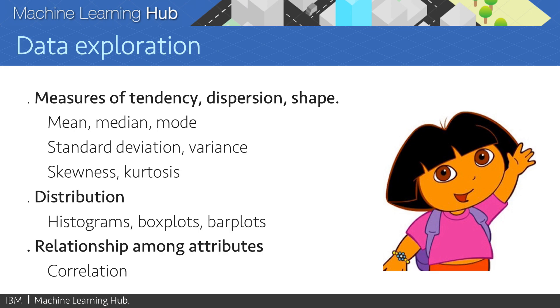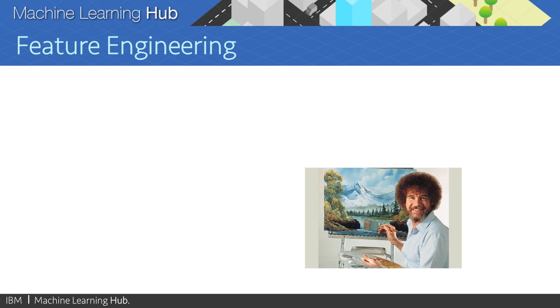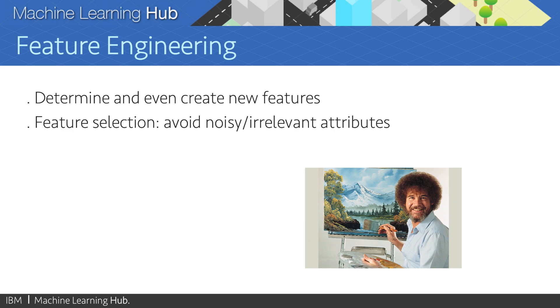Then it comes feature engineering, where machine learning becomes more of an art than a science. And my suggestion would be for data scientists to work very closely with subject matter experts to determine which are the features that are relevant for your specific problem. In real applications, it is very common to see datasets with a very large number of features. And there are different techniques for feature selection and dimensionality reduction. One of those techniques is called principal component analysis, or PCA. In a later video, we will go deeper into feature extraction and data exploration.